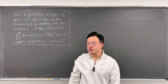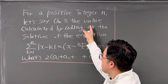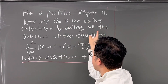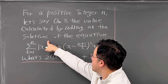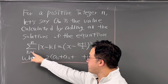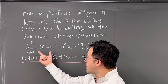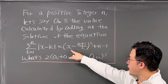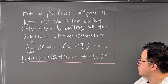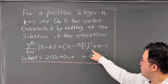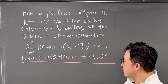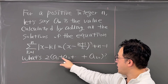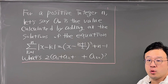Okay, here's the question. For a positive integer n, let's say a(n) is the value calculated by adding all the solutions of the equation: summation k from 1 to n of absolute value of |x - k| equals (x - (n+1)/2)² + n - 1. What's the value of 2 times (a1 + a2 + ... + a20)?